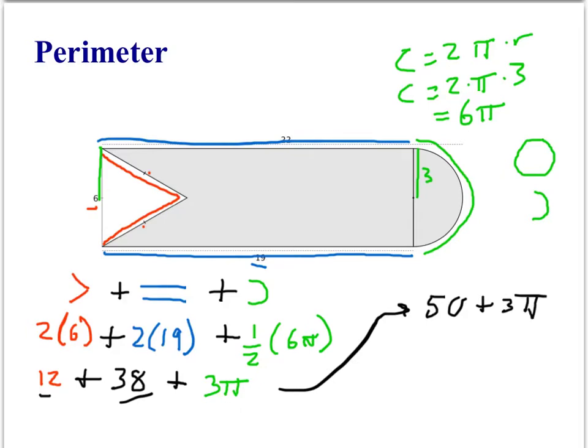And that would be our final answer in terms of exact numbers. And if instead we were asked for an approximation, you can take 50 plus 3 pi, plug it into your calculator, and that gives you about 59.425 units.